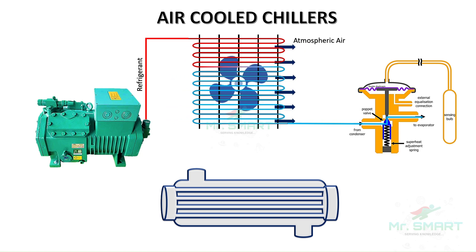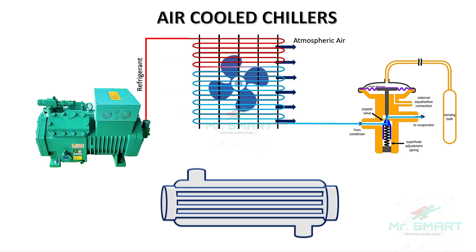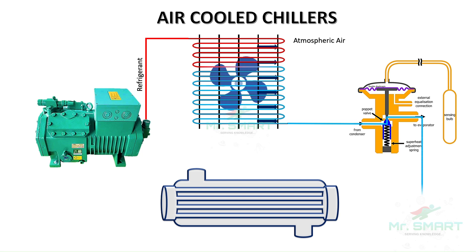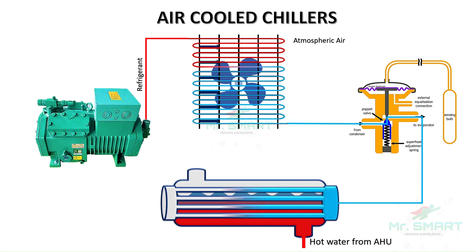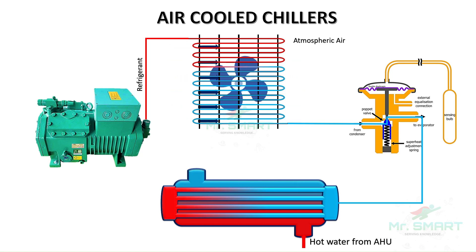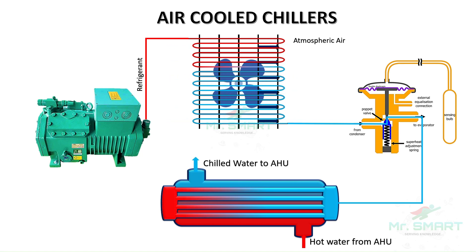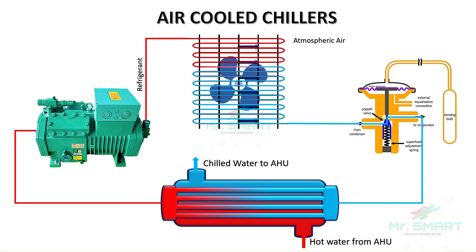The high-pressure liquid after condensation is passed through the expansion valve, which reduces the pressure and temperature of the refrigerant before it enters the evaporator. In the evaporator, the refrigerant absorbs heat from the chilled water released from the AHU, evaporating into a low-pressure refrigerant. This low-pressure refrigerant is then compressed again, and the cycle repeats.